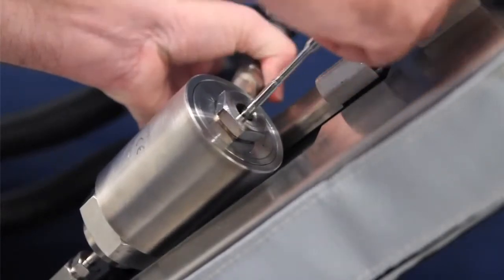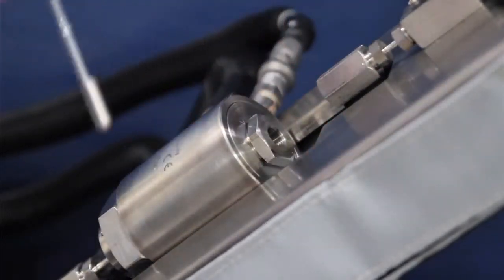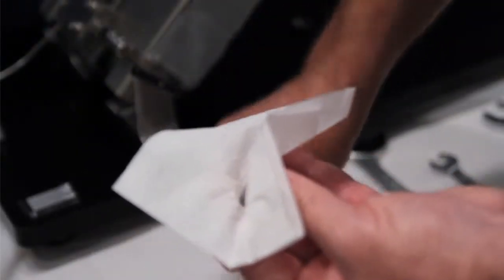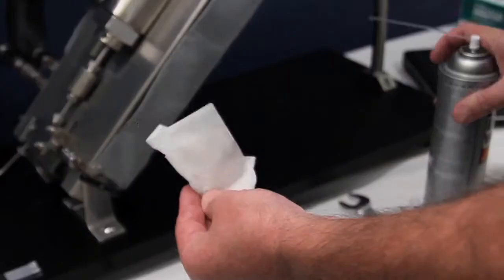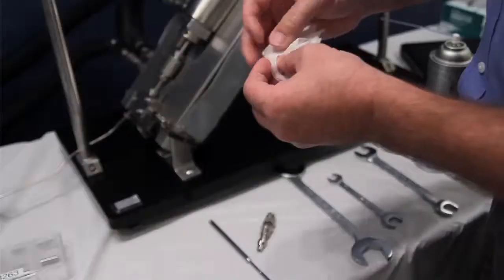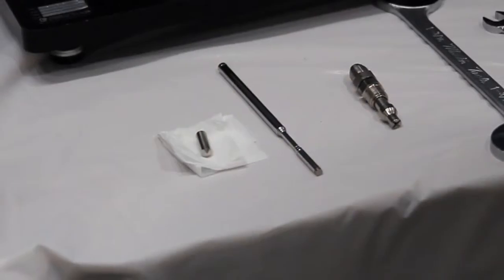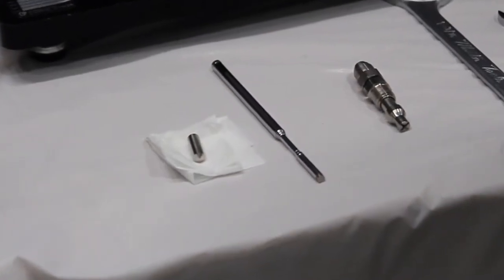Using magnetic wand, remove the piston by inserting the wand into the sensor's chamber. Place piston and kim wipe and dry. Use solvent to clean the piston. Dry piston with kim wipe. You have now completed the process of removing the piston.